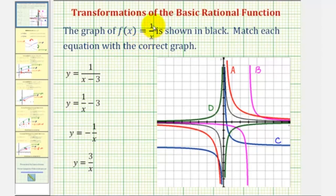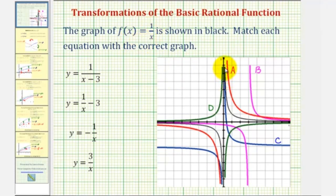The graph of f of x equals one divided by x is shown in black on this graph. We want to match each equation with the correct graph also shown on the same coordinate plane. The basic function f of x equals one divided by x has one piece in the first quadrant and the second piece in the third quadrant.